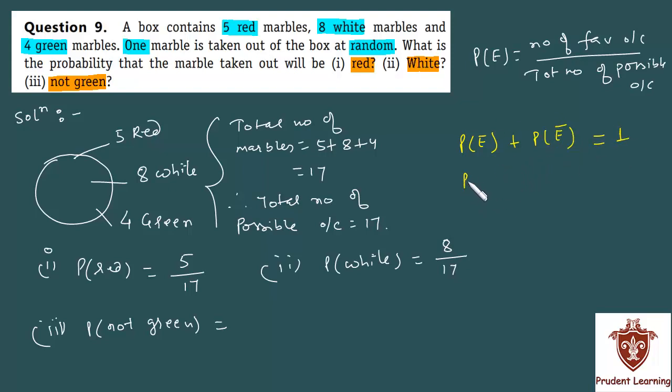So, the probability of green plus the probability of not green equals 1. So probability of not green will be 1 minus probability of green. That's what I'm going to do here.